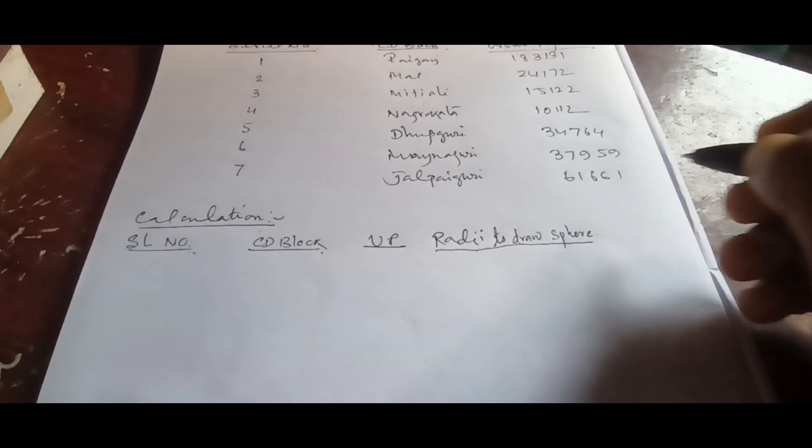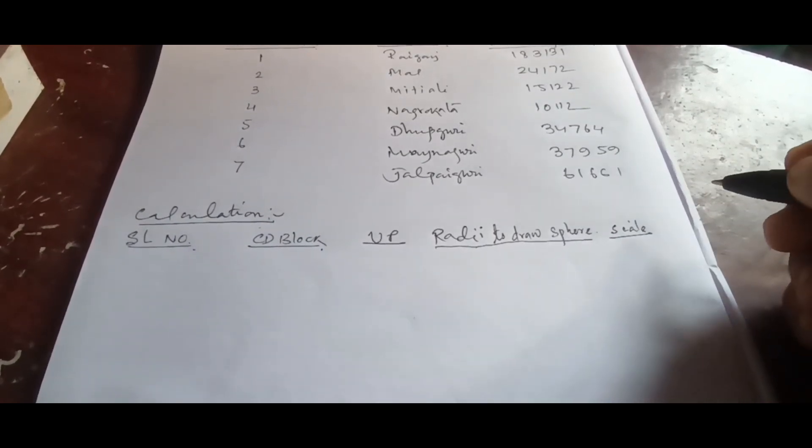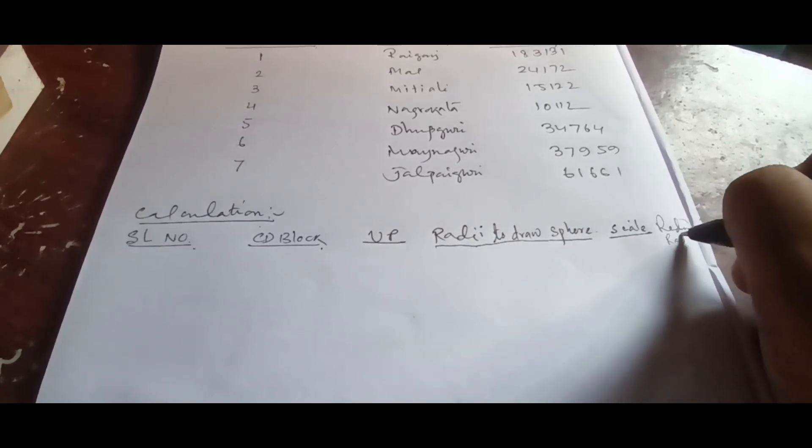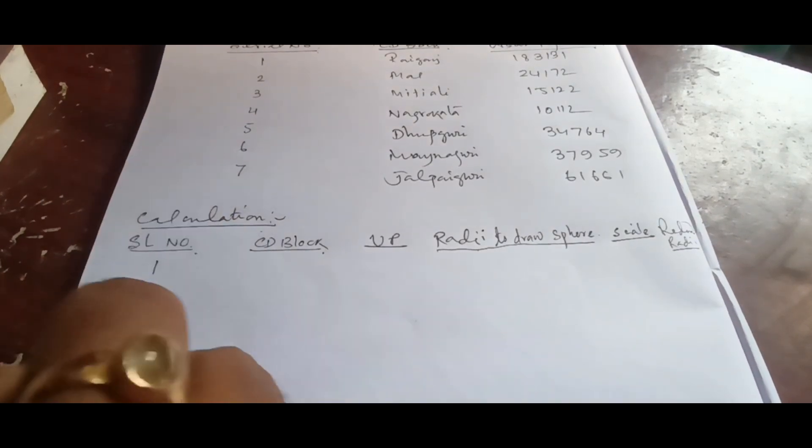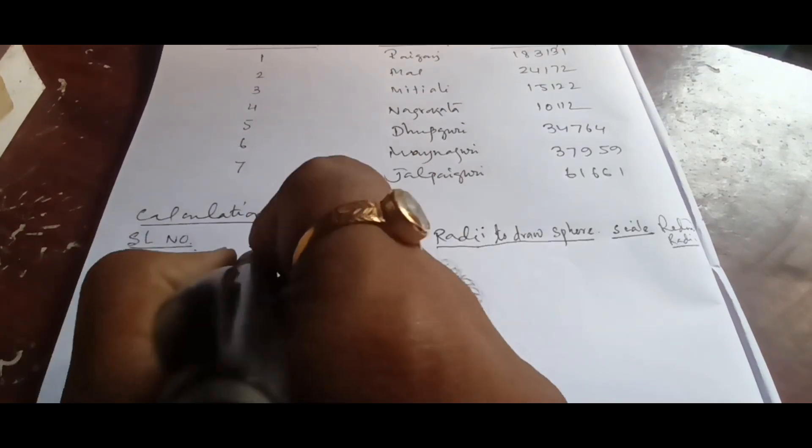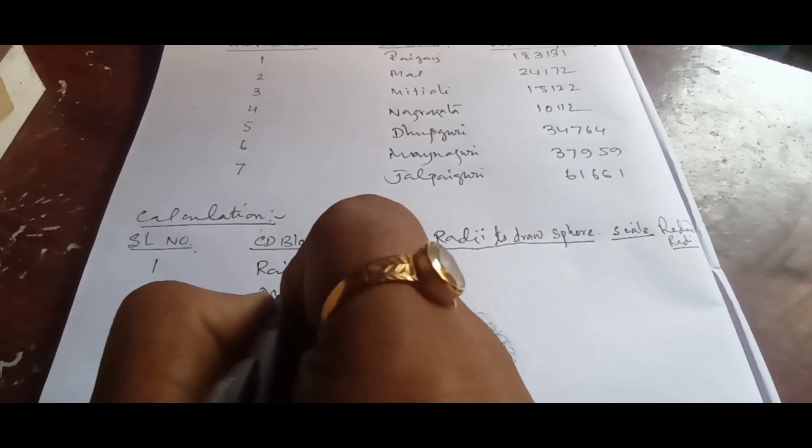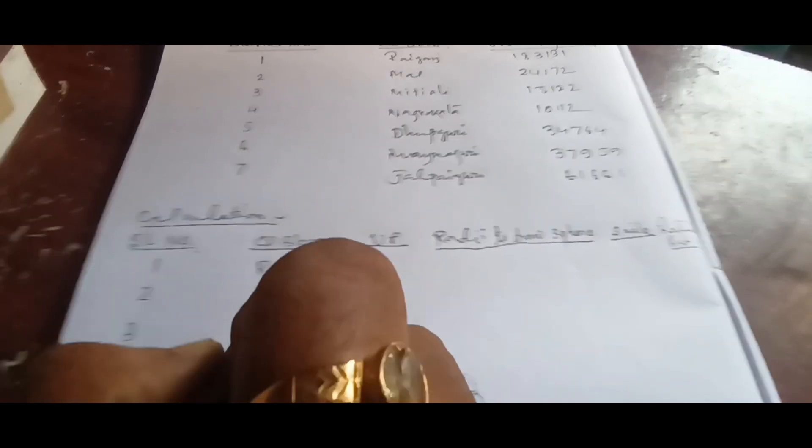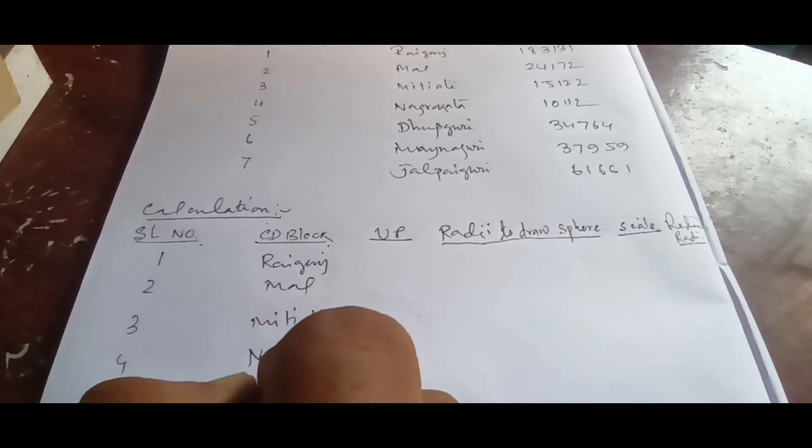We have the scale and finally the reduced radii after applying the scale. So one, two, three, four, five, six, and seven. First one is Raiganj, second one is Mal, then Mitiali, followed by Nagrakata.